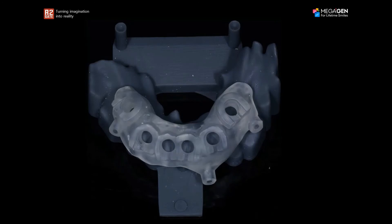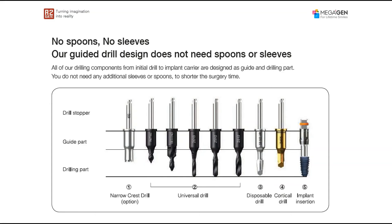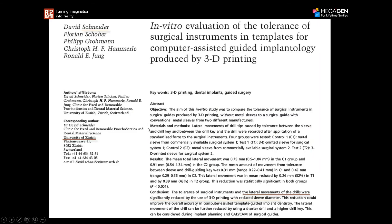The R2GATE surgical guide design is quite simple. It does not use sleeves and it does not use spoons, because of the special design of the drills. The drills of the R2GATE surgical kits are composed of two parts: the guide part and the drilling part. The guide part is a smooth part and this is the part that engages the surgical guide, so there's no danger when it engages. It has also been proven in the literature that using surgical guides without metal sleeves that are completely 3D printed actually reduces the lateral movements of the drills. Using 3D printing with reduced sleeve diameter reduces the amount of wiggle and deviation that happens with the drills.